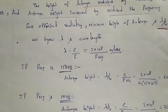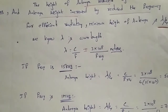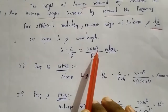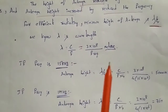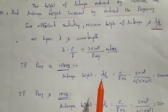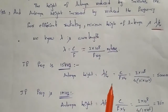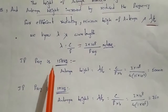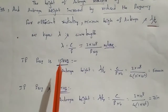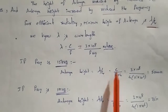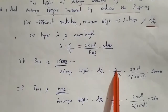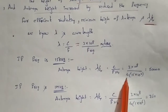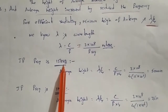One wavelength is related to light speed. Frequency is F. Lambda equals C divided by F, where C equals 3 × 10⁸ meters per second. The antenna height formula is lambda by 4. For a frequency of 15 kilohertz, lambda by 4 equals 3 × 10⁸ divided by (4 × 15 × 10³), which equals 5000 meters.